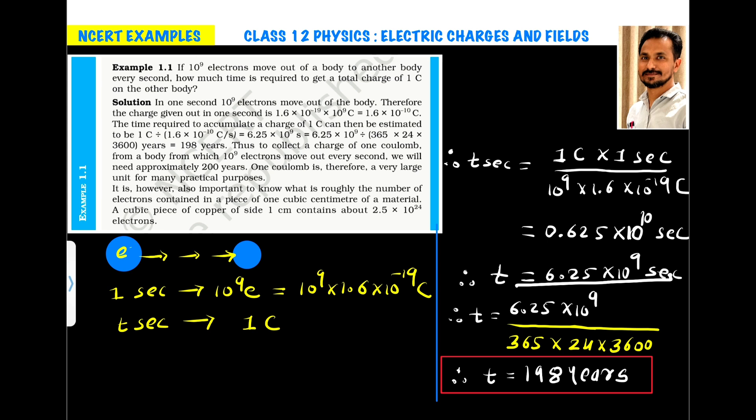Now, if it is asked to find the time in years, then we know that 1 year is equals to 365 days and 1 day contains 24 hours and in 1 hour we have 3600 seconds.